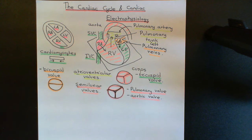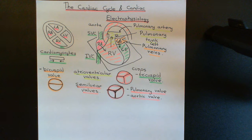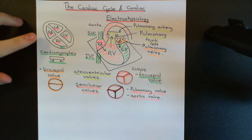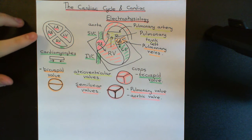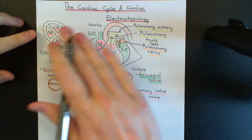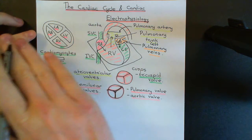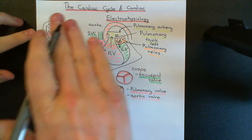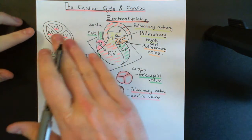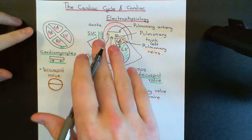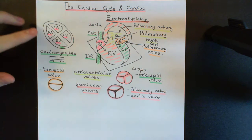Welcome back to this next video in which we are discussing the cardiac cycle and cardiac electrophysiology. In the previous video we went over the anatomy of the heart. We also saw what this picture that I'm going to be drawing from now on actually represents - how it shows all four chambers of the heart in a difficult plane to visualise, where you've chopped through at a diagonal angle so that you can see all four chambers of the heart together.